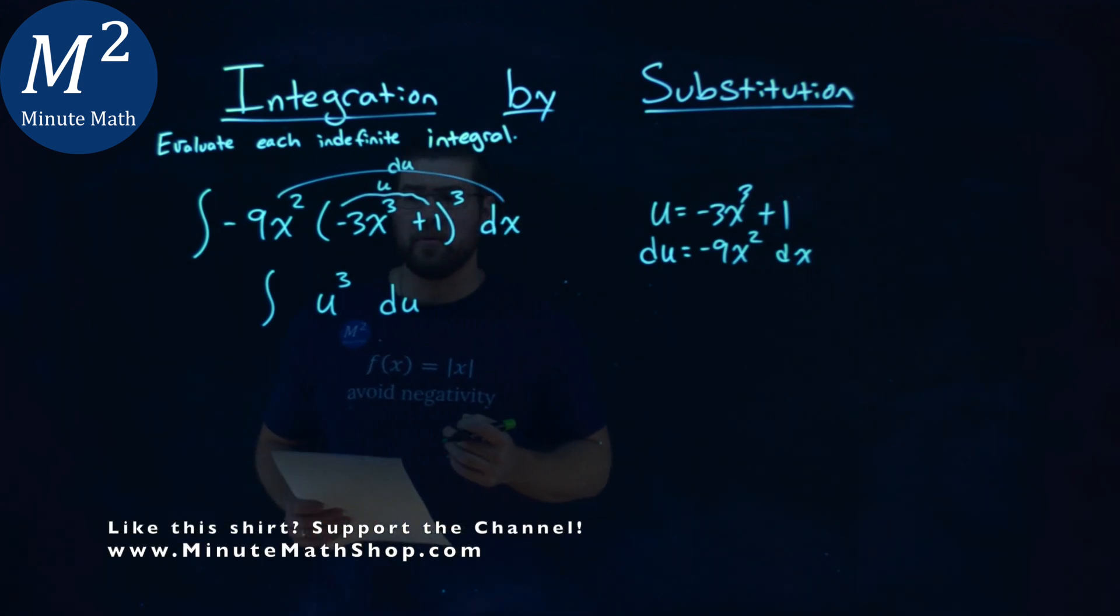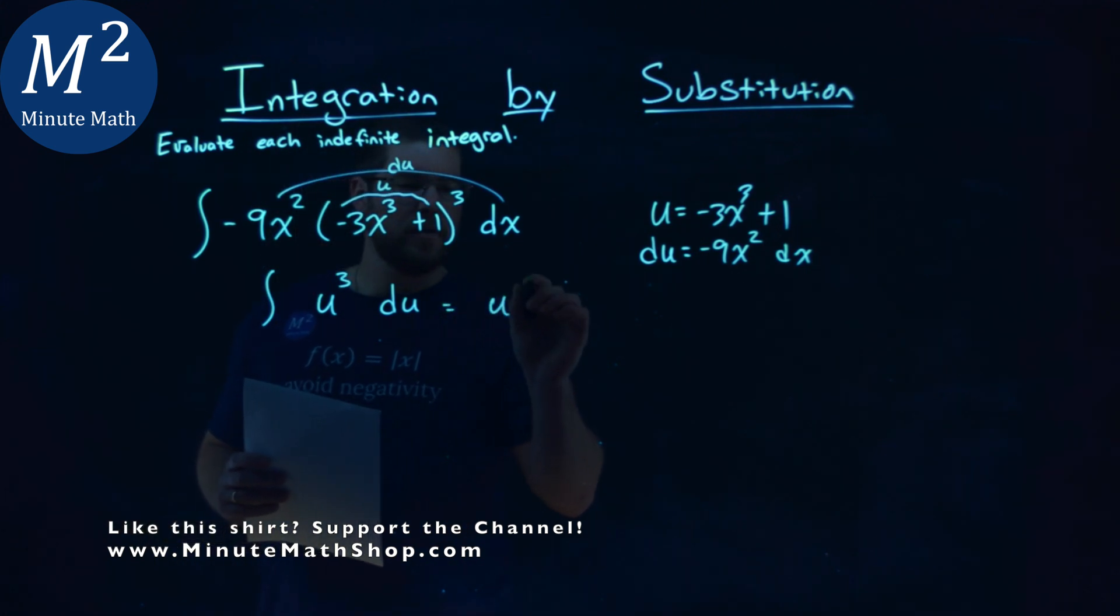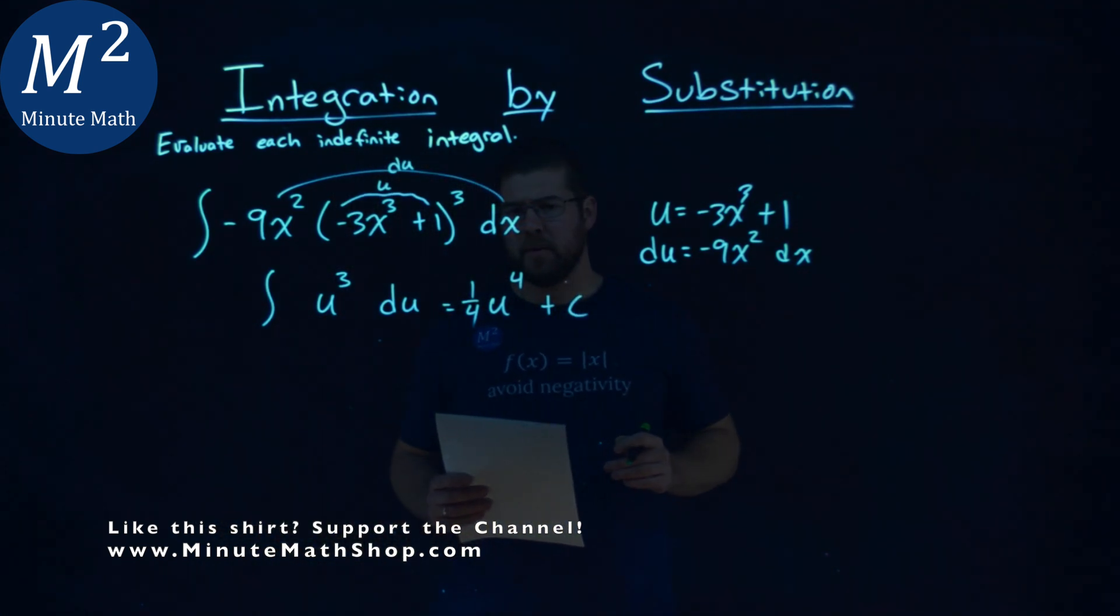Now this is a much easier integral to solve. Power rule says we have u to the fourth power, put one-fourth out front, and then we have a plus c going on right there, okay?